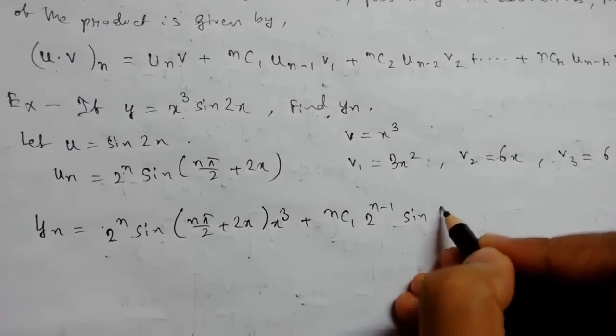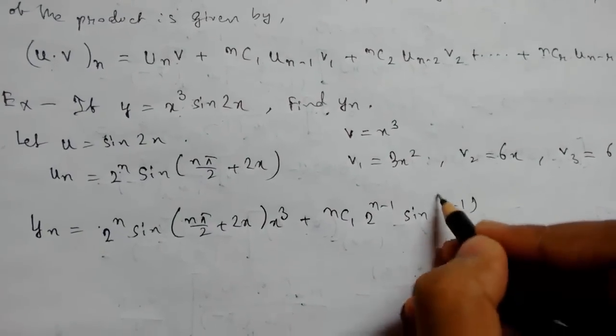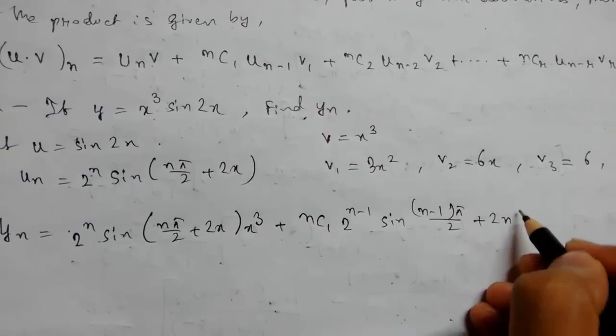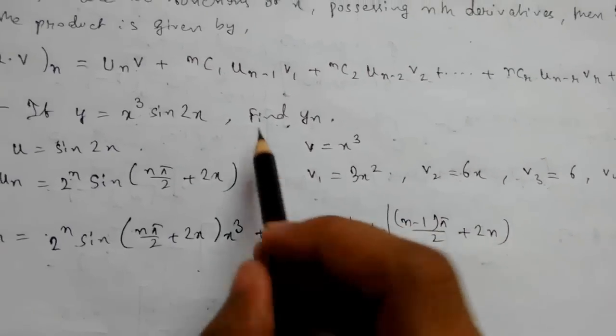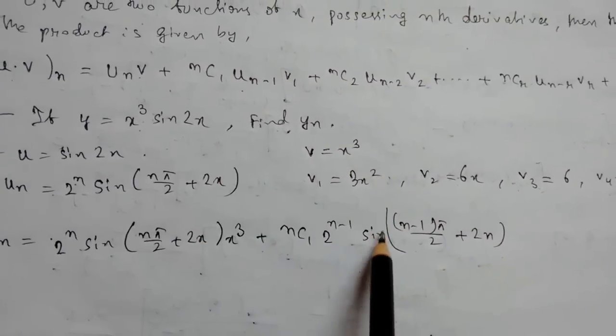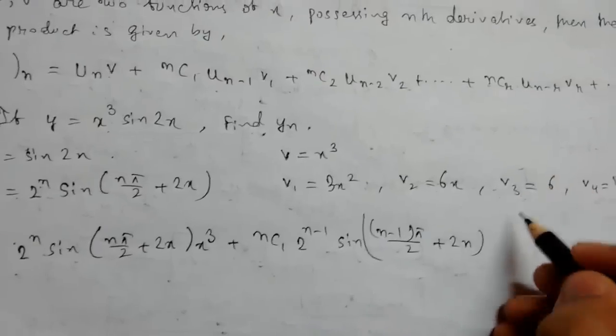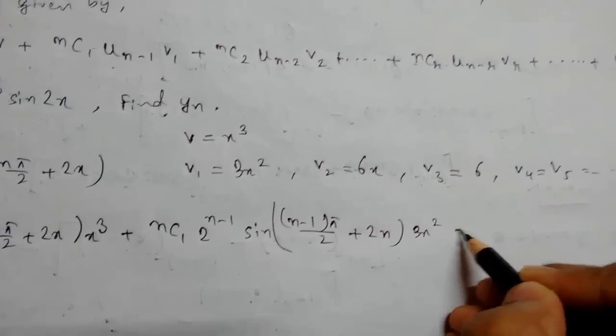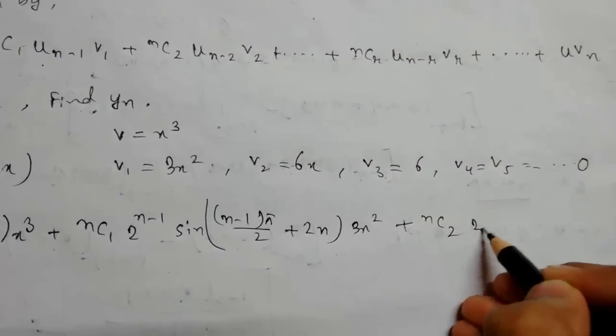- this was for the (n-1) derivative - and v will be 3x². Plus nC2·2^(n-2)·sin((n-2)π/2 + 2x)